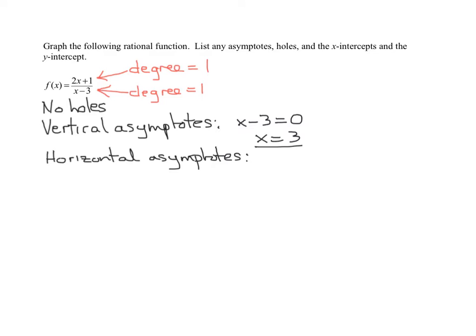So in this case, the degrees are equal. And remember, when the degrees are equal, you have a horizontal asymptote. And the equation is y equals the ratio of the leading coefficient. What's the leading coefficient in the numerator? 2.